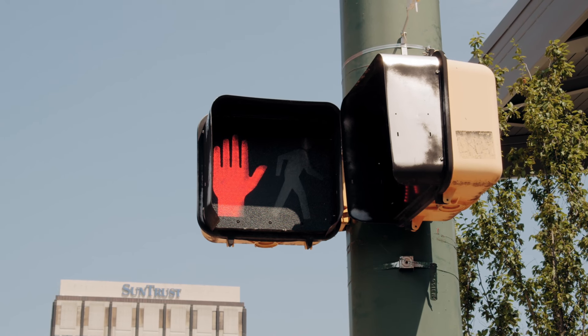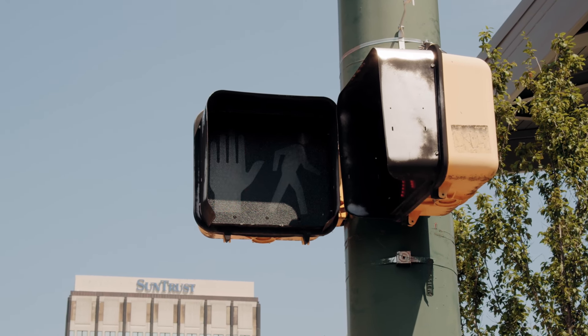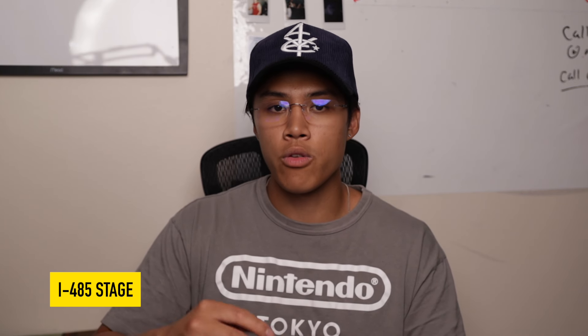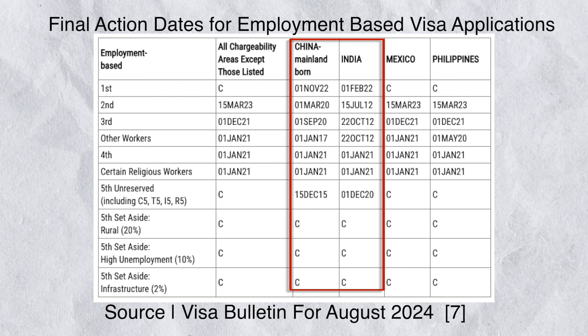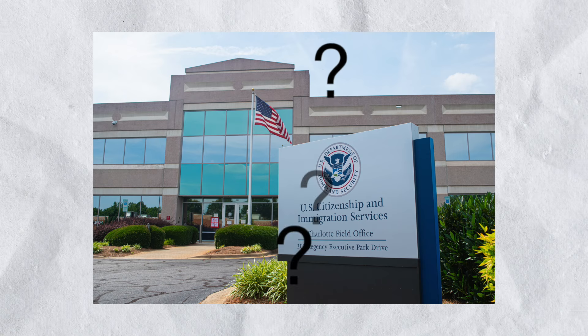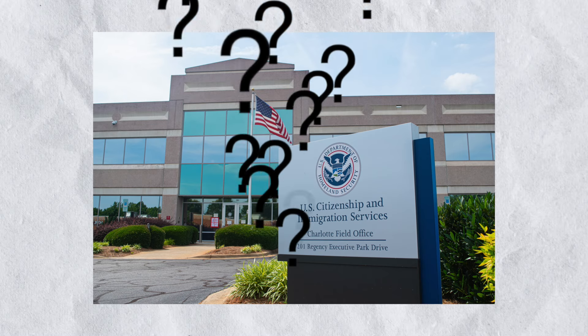Once you send over your adjustment of status papers, all there is left to do is sit and wait. This last stage can take a varying amount of time. Friends of mine who were current for both filing and adjustment dates got their green card after six months of filing — but that was a couple of years ago, and waiting times have gotten longer. If you're born in India or China, your wait time is going to be much longer because of the visa bulletin and visa backlog. It's hard to put an exact time estimate on this stage — USCIS is kind of like a black box.